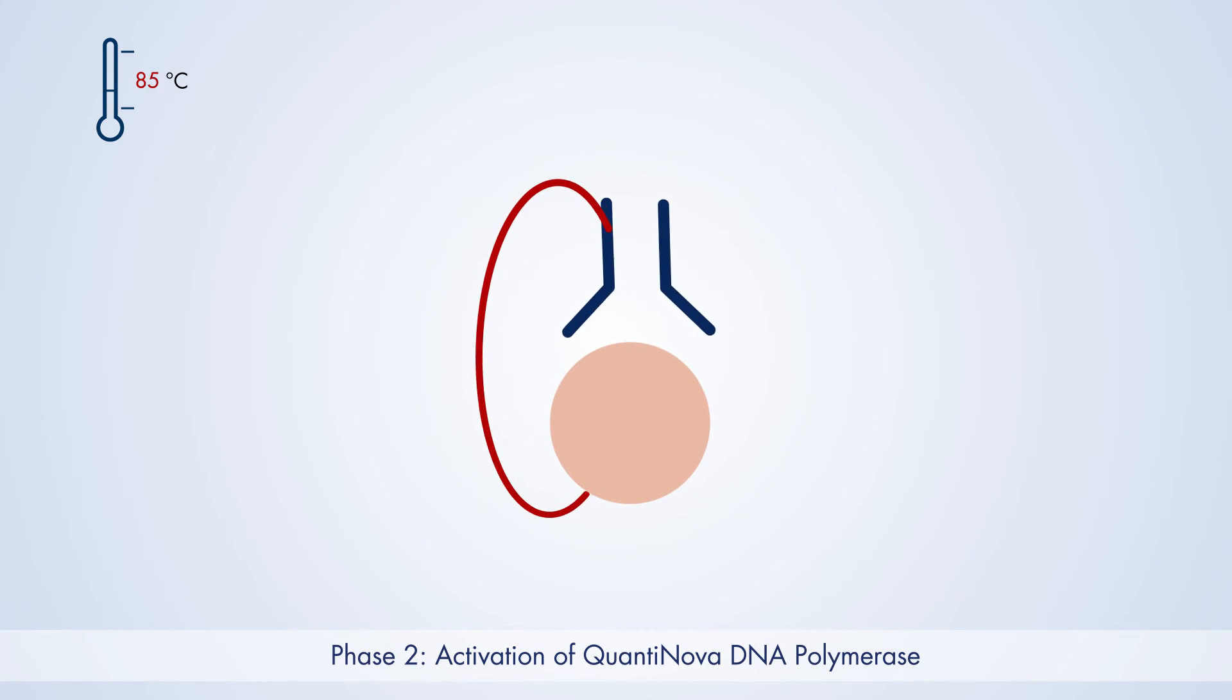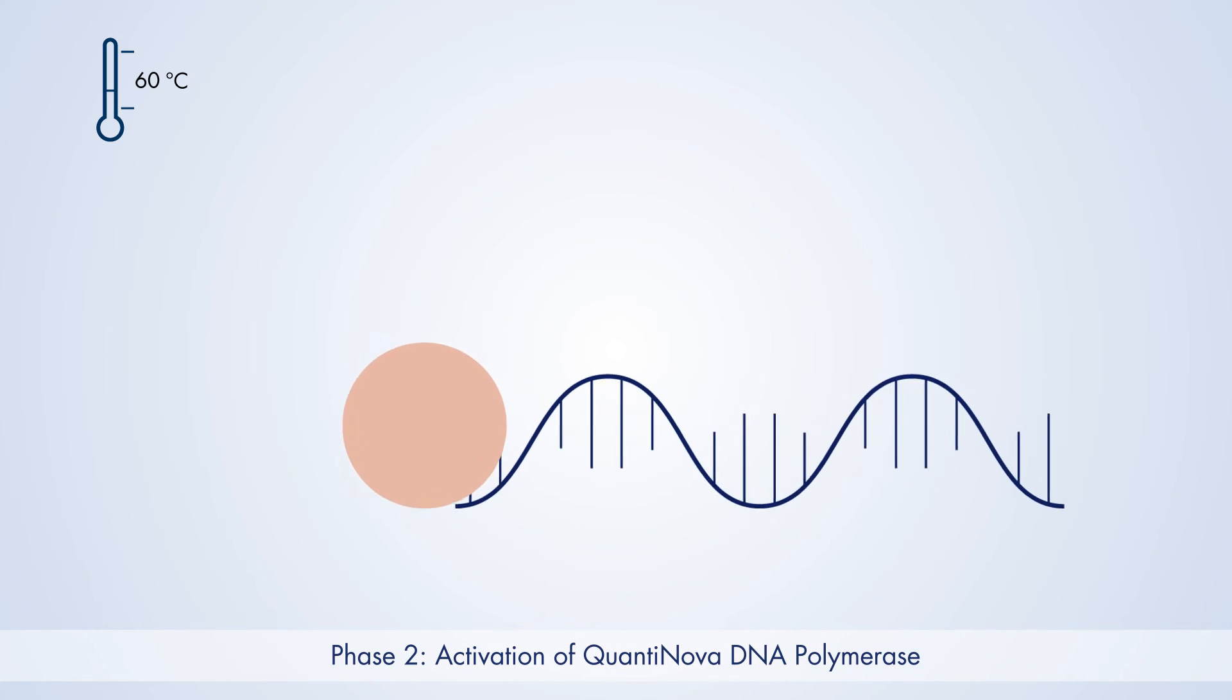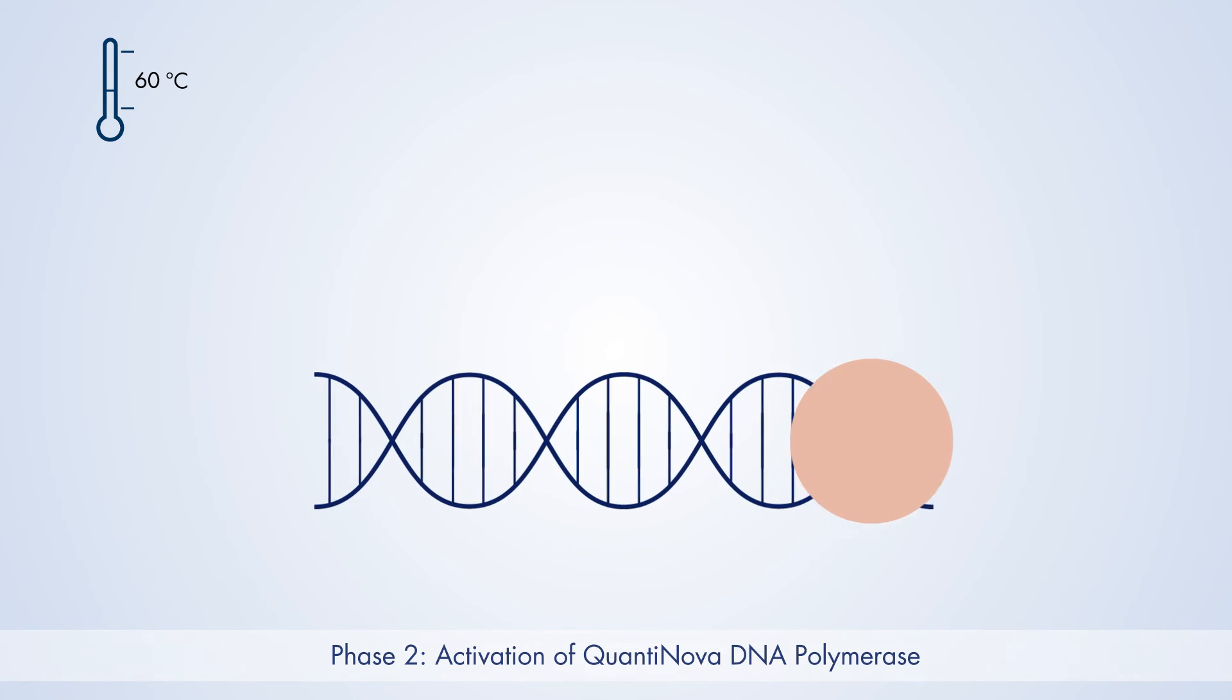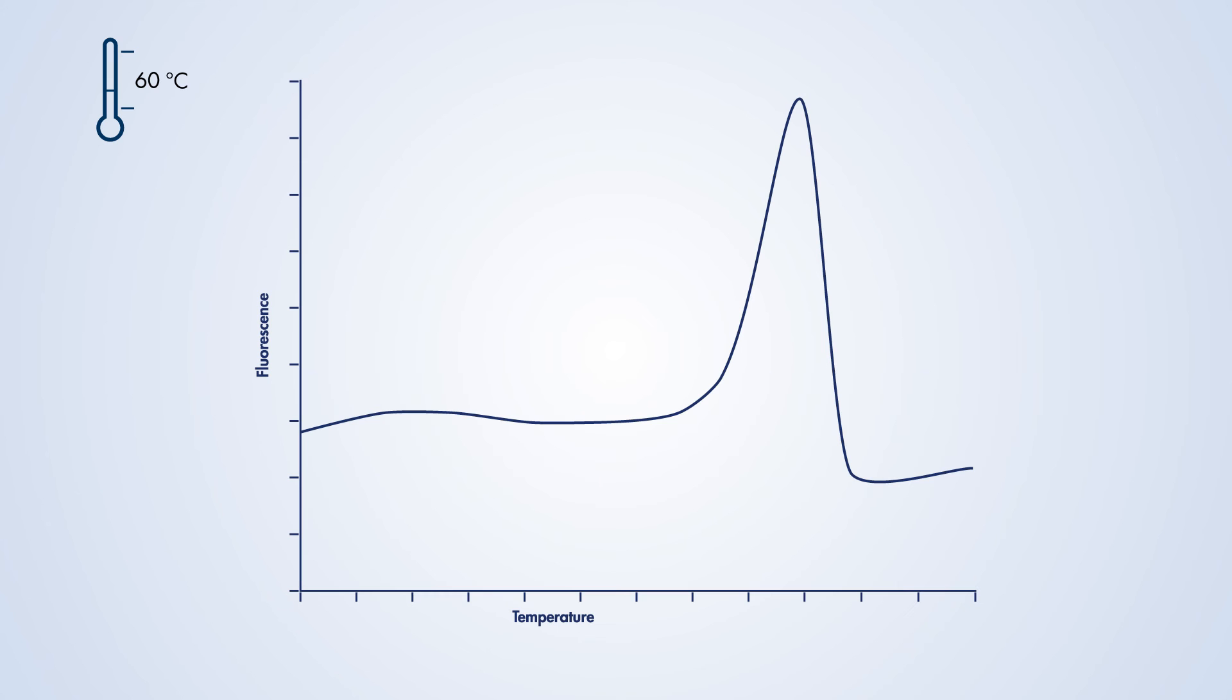When the reaction mixture is heated to 95 degrees Celsius, the QuantiNova guard and antibody denature. This allows the QuantiNova DNA polymerase and the DNA to interact freely, resulting in highly specific PCR amplification.